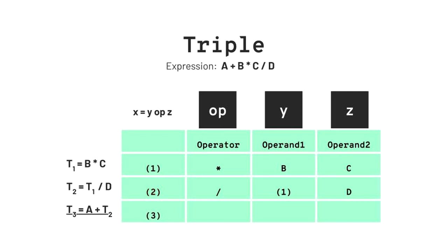The third code is t3 = a + t2. The operator is plus, operand1 is a, and operand2 is the result of b * c / d, which we assume to be temporary value 2. This is the complete triple representation of three address code.